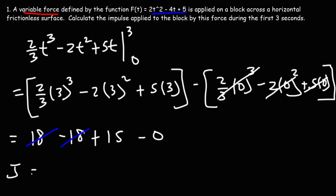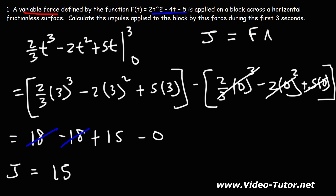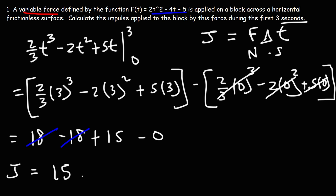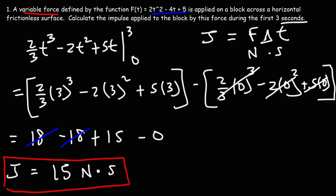So the impulse applied to the block by this variable force is 15. Thinking about units: the unit of force is the newton and the unit of time is seconds, so impulse is represented in newton-seconds. The answer is 15 newton-seconds.